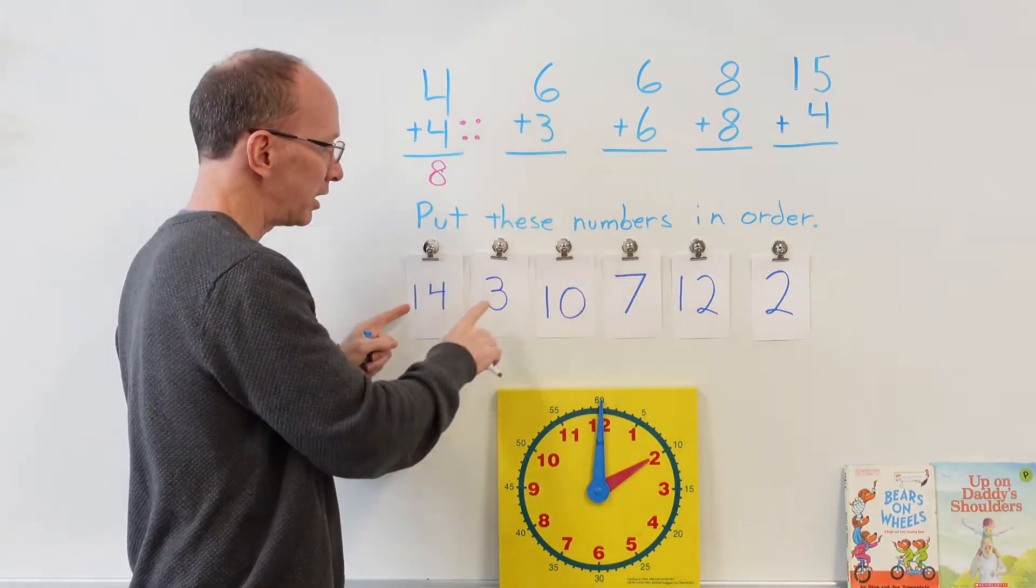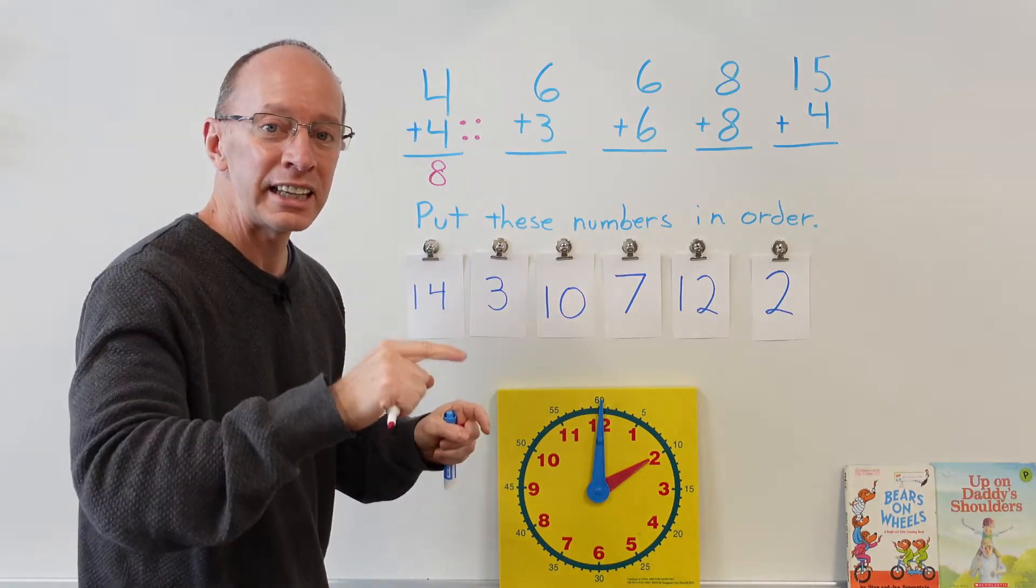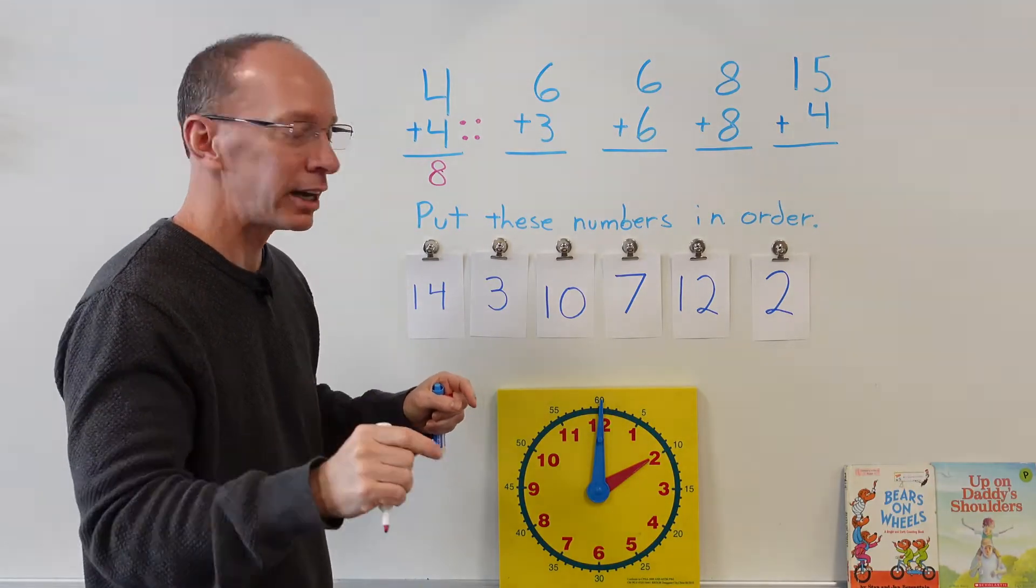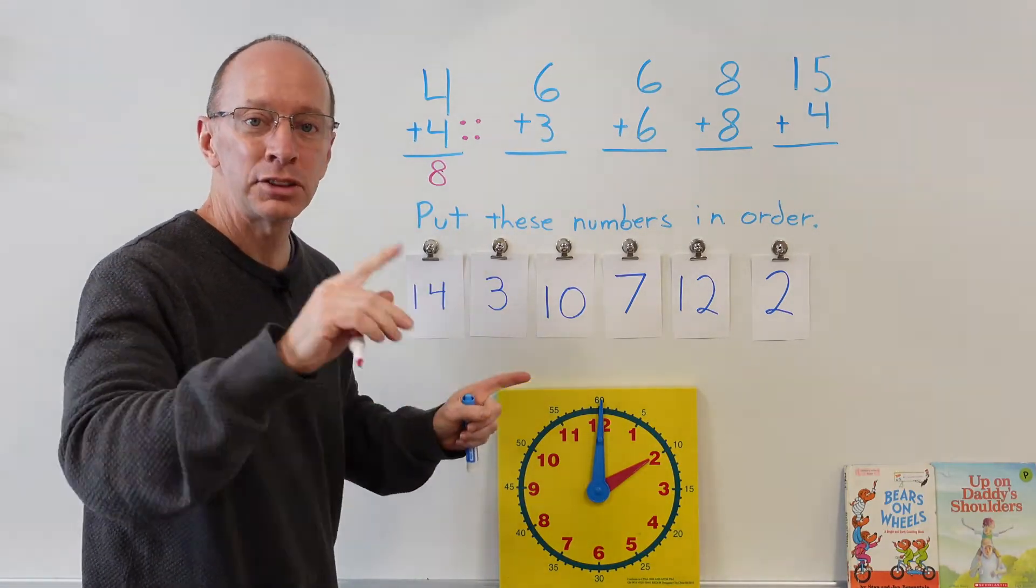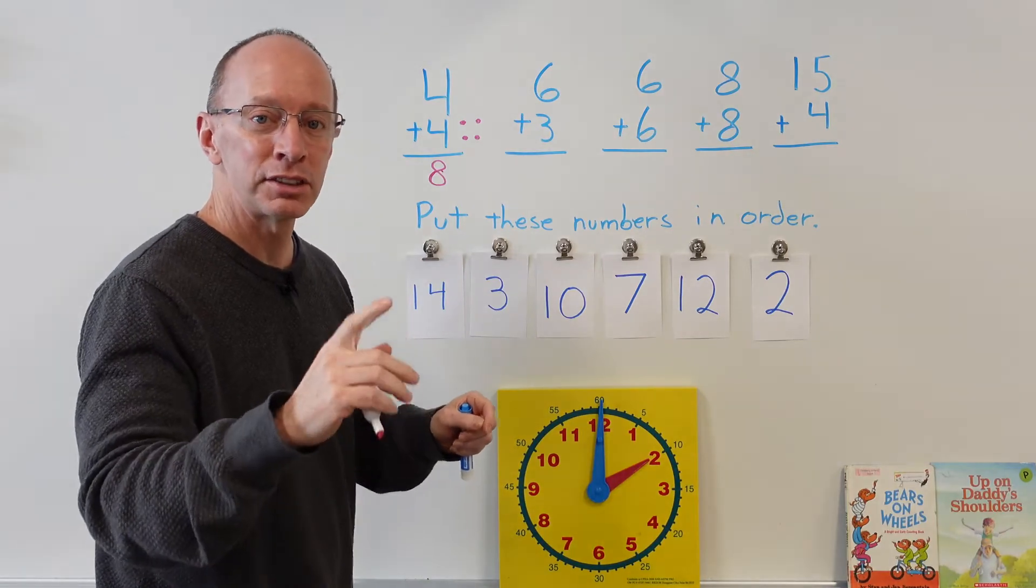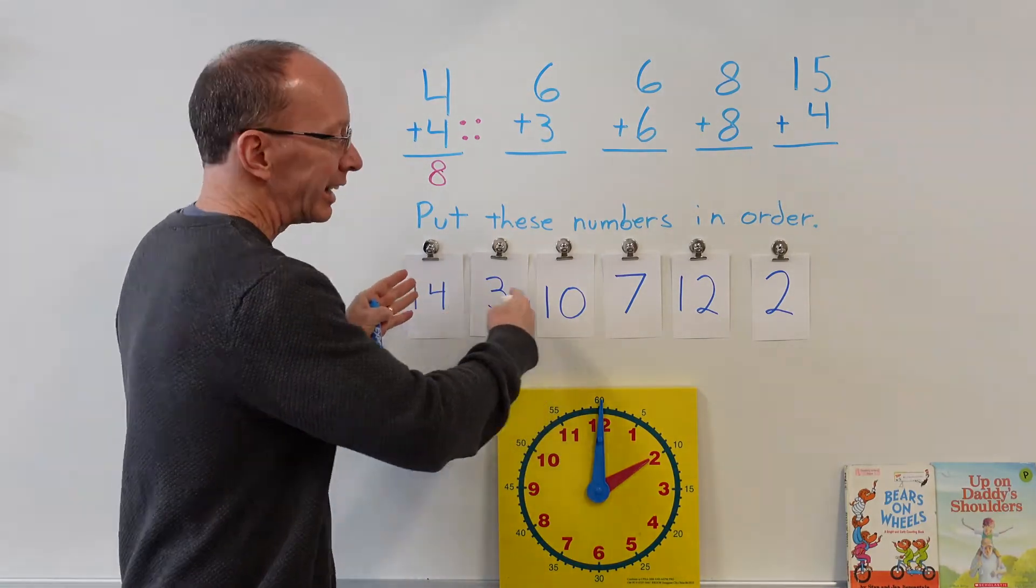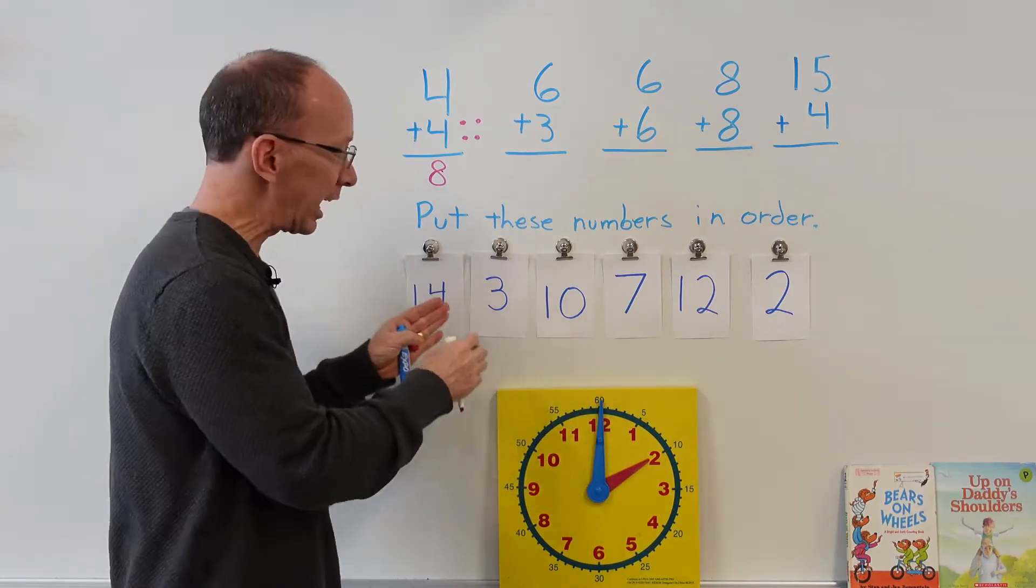Okay, so the next thing is to put these numbers here in order from least to greatest. Remember from least to greatest—that means from smallest to biggest. I want the smallest number here and then the biggest number here.